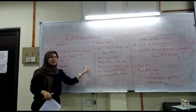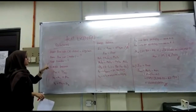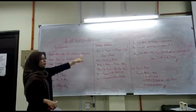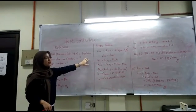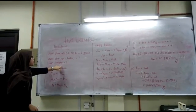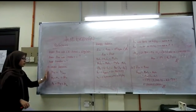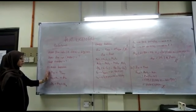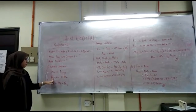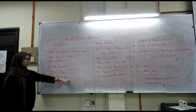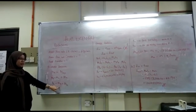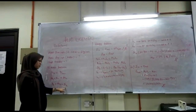Here is the solution. From the question, the given mass flow rate is 6 kg/min. We need to find the mass flow rate of water and the heat transfer rate. First, we apply the mass balance equation: mass in equals mass out. Mass 1 equals mass 2, which equals mass of water. Mass 3 equals mass 4, which equals mass of refrigerant.